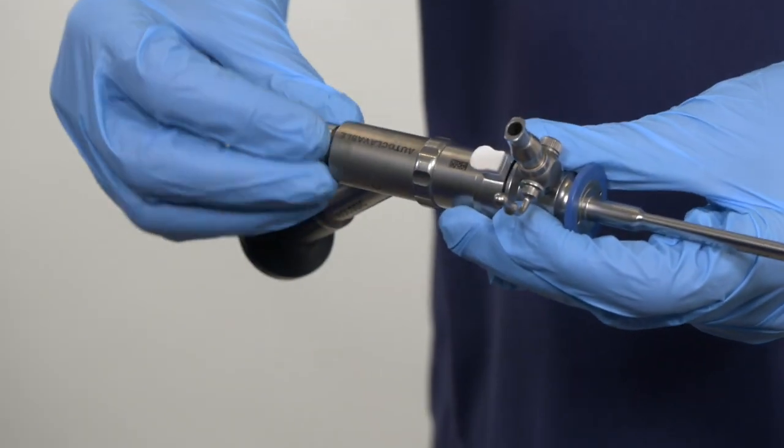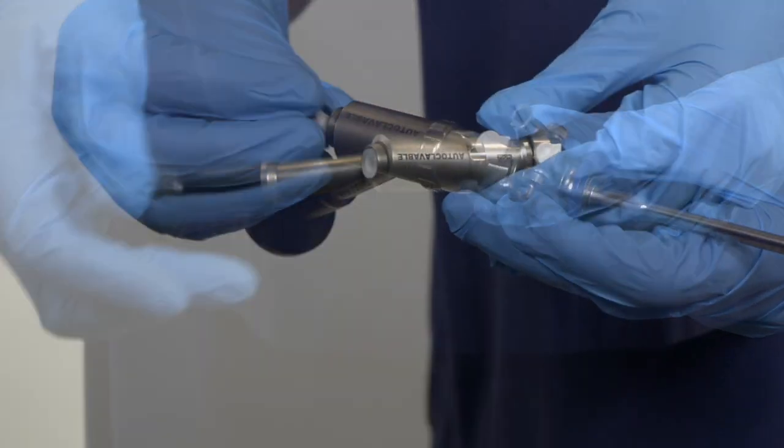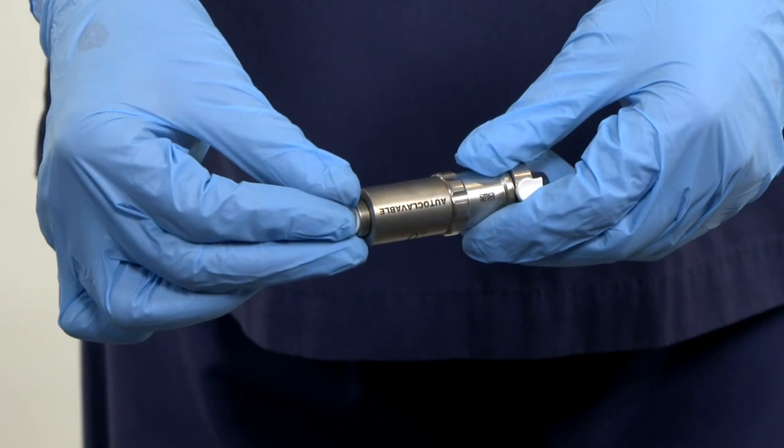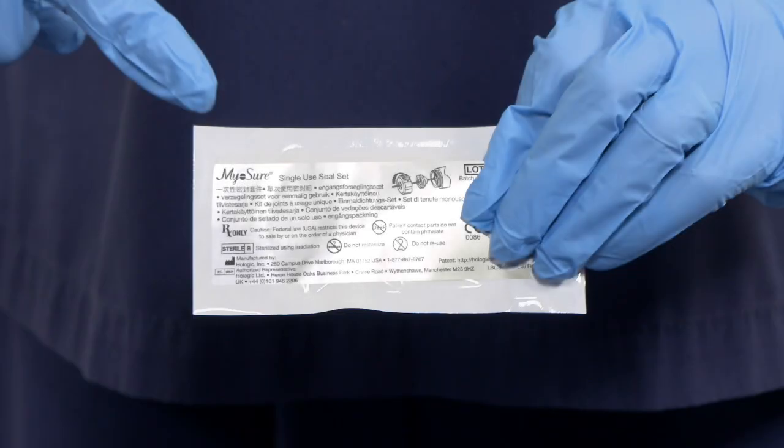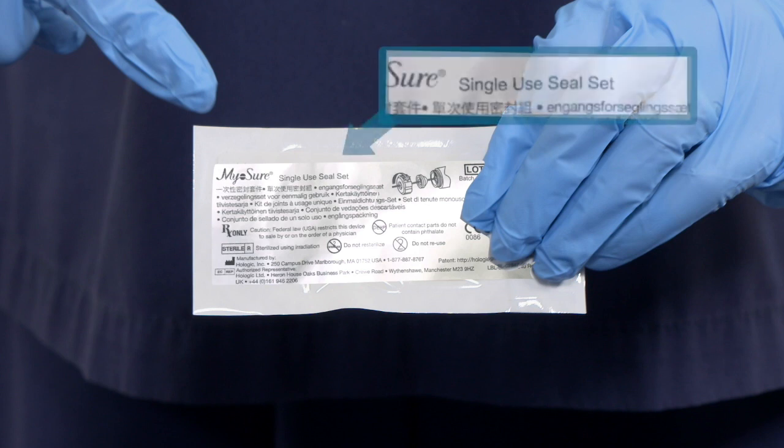Once the procedure is complete, remove the scope seals from the body of the scope and outflow channel and discard. Remember the scope seals are single use, therefore need to be removed after each procedure.